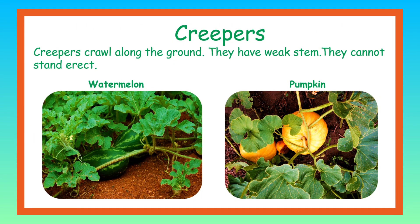Creepers. Creepers crawl along the ground. They have weak stem and they cannot stand erect. Some examples of creepers are watermelon and pumpkin.